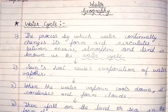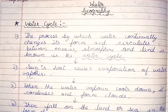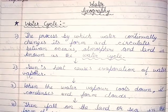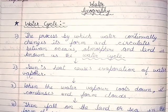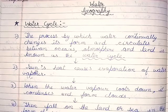Hello friends, today we are going to learn the chapter water. Water cycle — the process by which water continually changes its form and circulates between oceans, atmosphere and land is known as the water cycle.